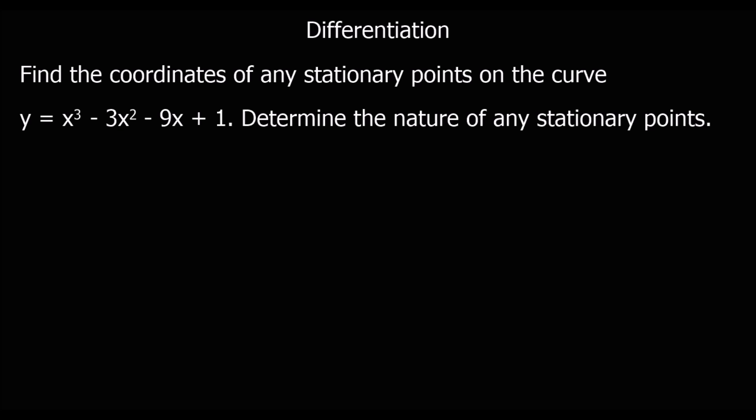Here we have a question: find the coordinates of any stationary points on this curve and determine their nature. To find the coordinates, stationary points are where dy/dx is zero, so we find dy/dx, make it equal to zero, and find the stationary points. So dy/dx is 3x² minus 6x minus 9. That's our gradient function, and we need to know where it equals zero.